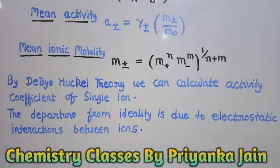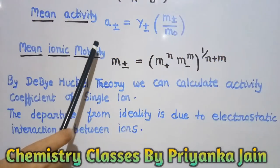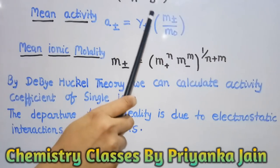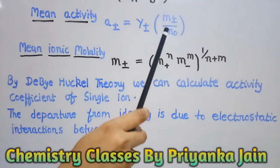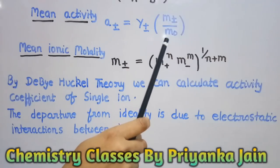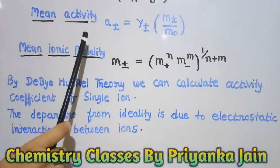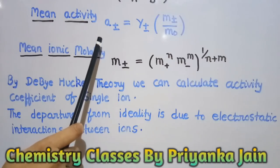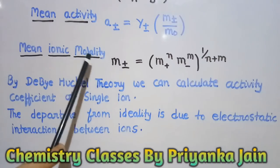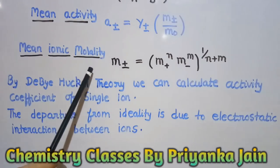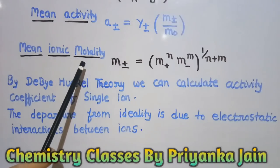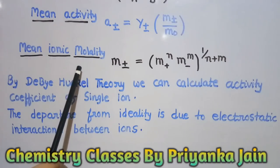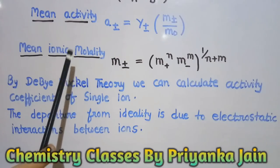The mean activity is given by the formula: mean activity equals the mean activity coefficient times the mean molality divided by the standard molality. One thing should be noted that these formulas are not part of the Debye-Hückel theory — they are presented here because they are very important and several numericals come from these formulas.